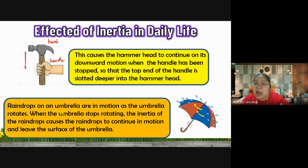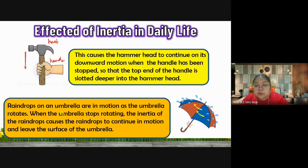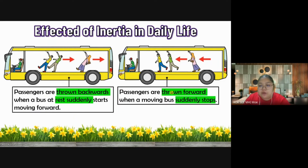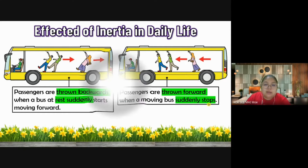Such situations can appear as essay questions - for example, the definition, comparison, and process questions. They may ask: how do the raindrops on the umbrella continue to drop even when you stop rotating? You need to bring in the concept of inertia. Similarly for the bus passenger: the passenger turns backward when the bus starts suddenly, and turns forward when the moving bus suddenly stops. You explain using the inertia of the passenger.